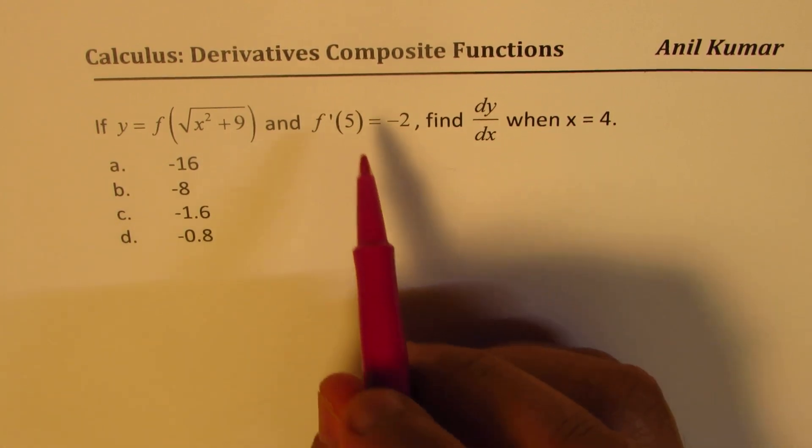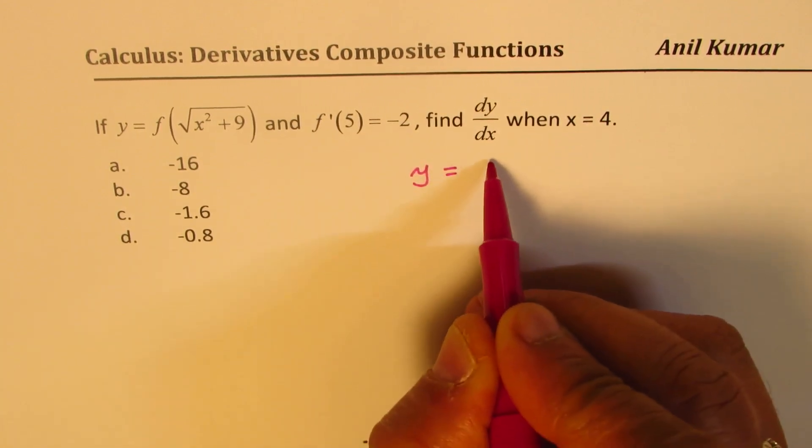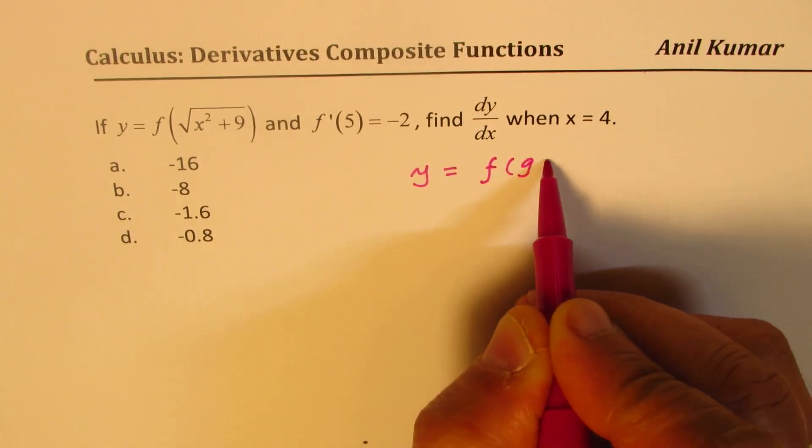Now, we'll begin with the derivative of composite functions. If I say y is equal to f of g of x,